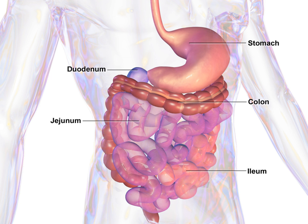The digestive enzymes break down proteins, and bile emulsifies fats into micelles. The duodenum contains Brunner's glands which produce a mucus-rich alkaline secretion containing bicarbonate. These secretions, in combination with bicarbonate from the pancreas, neutralize the stomach acids contained in the chyme.